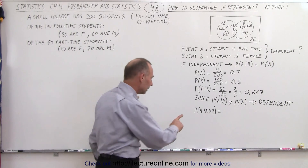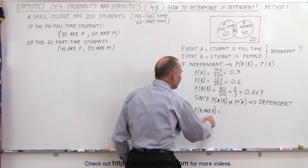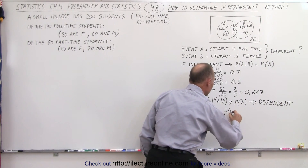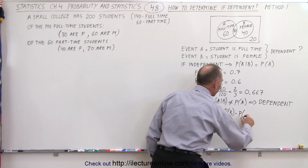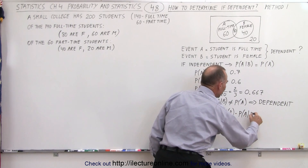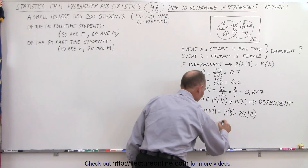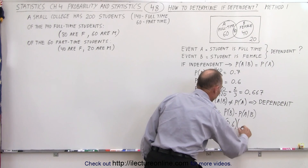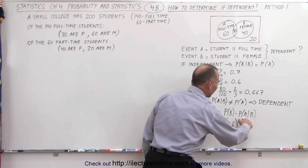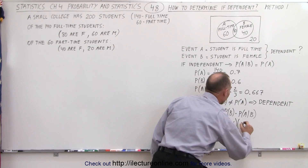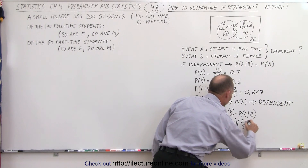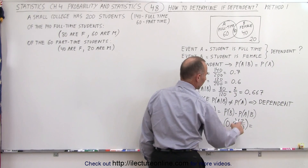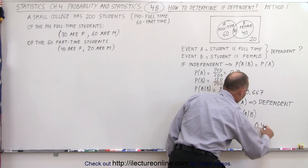Now let's calculate the probability of A and B. That is equal to the probability of B multiplied by the probability of A given that B has occurred. The probability of B is 0.6, and we multiply it by the probability of A given B, which is 2/3. So 0.6 times 2/3 equals 0.4.